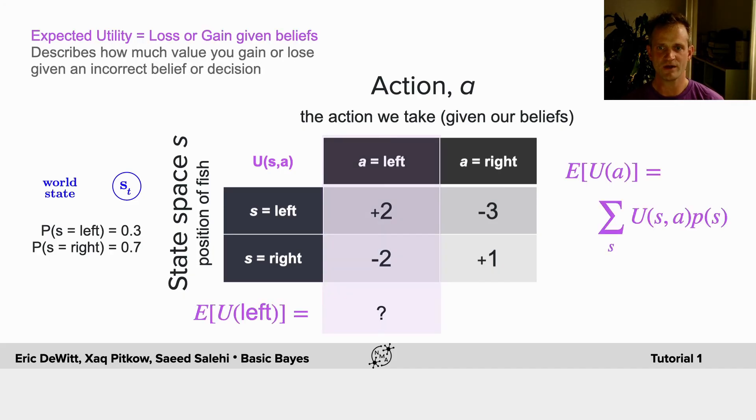Now, of course, we need to be able to calculate the expected utility of taking an action. Now, we know what the action is, fishing on the left, but we don't know the true hidden state of the world, whether the fish are on the left or the right.